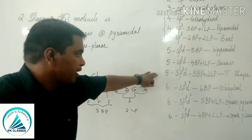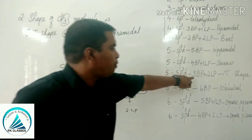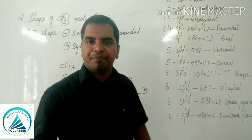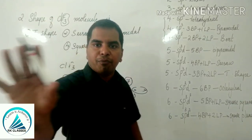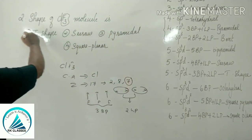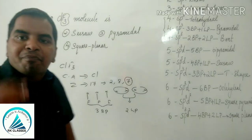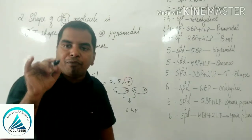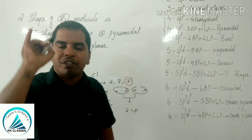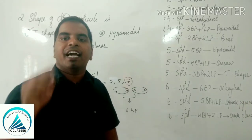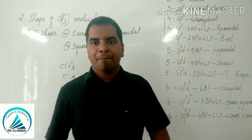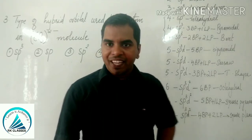So the shape of the molecule is T-shape. The shape of ClF3 molecule is T-shape because there are 3 bond pairs and 2 lone pairs.